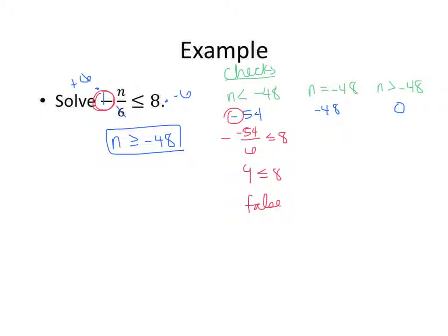Then negative negative 48 over 6, less than or equal to 8 — that becomes 8. Is 8 less than or equal to 8? That's true since it has the equal to part. And for 0: negative 0 divided by 6 is 0. Is 0 less than or equal to 8? That is true.